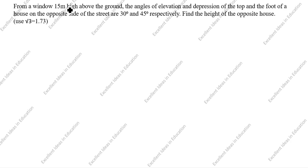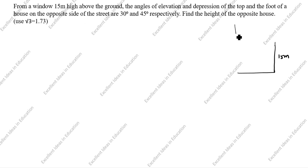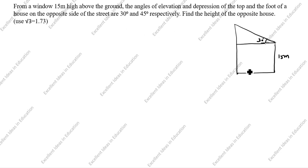This is a board exam problem. From a window 15 meters high above the ground — this is the ground level, 15 meters high — the angle of elevation of the top of a house on the opposite side of the street is 30 degrees, and the angle of depression of the foot of that house is 45 degrees.